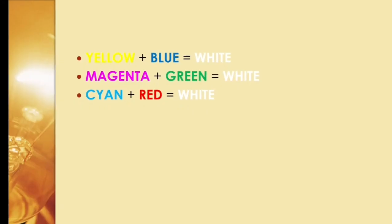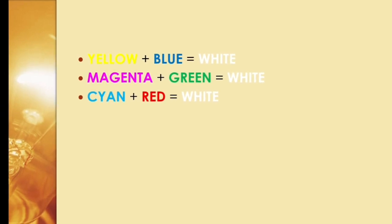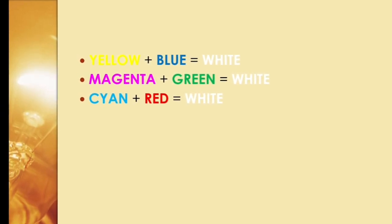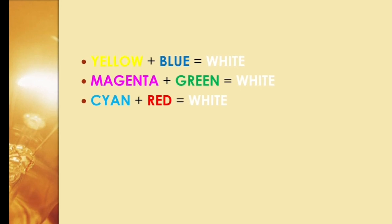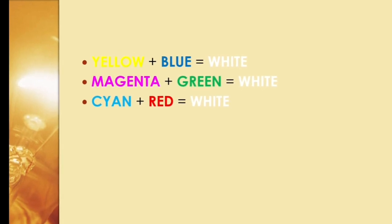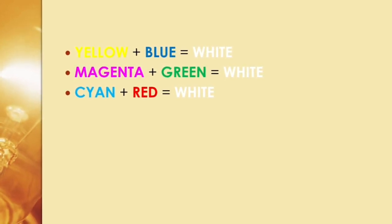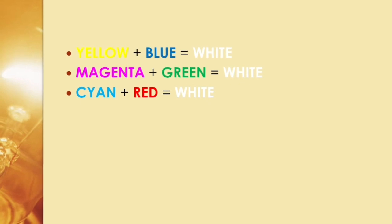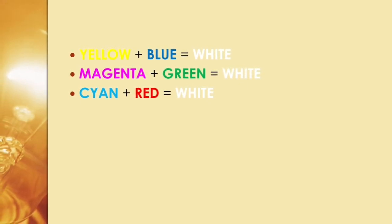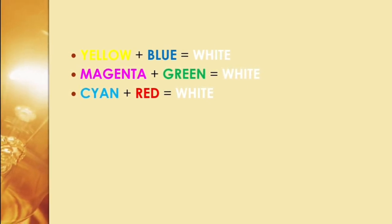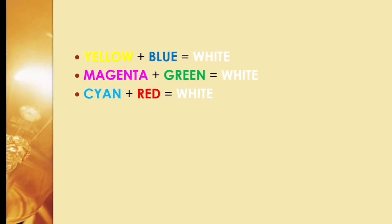Here you can see how a secondary color mixed with the remaining primary color gives white light. That is why a washerman uses a little blue indigo after washing white clothes, so as to make the yellowish tint of the clothes appear white.